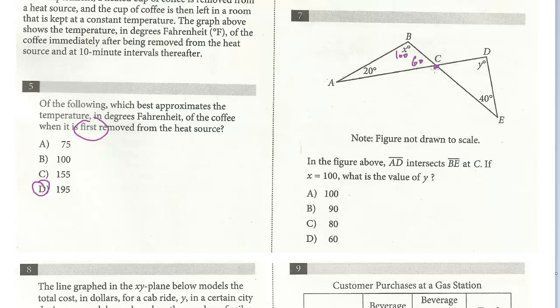We also have vertical angles, which are always equal. So we have another triangle, and we just add these up: 100 plus the vertical angle's corresponding parts, and what's left for Y is 80.